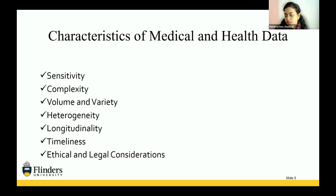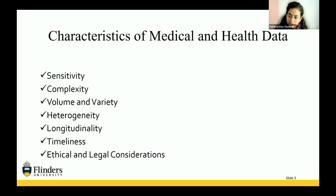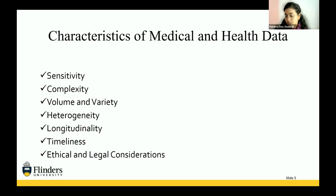Heterogeneity: health data often originates from different sources, including hospitals, clinical libraries, wearable devices, and research studies. Each source may adopt a different data standard, format, and coding system, making interoperability and data integration quite challenging. Achieving data harmonization and standardization is crucial for effective analysis and exchange of health information.